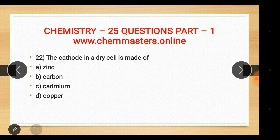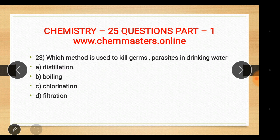Question twenty-two: the cathode in a dry cell is made of carbon. The anode in a dry cell is made of zinc. The other cathode options given were cadmium and copper.